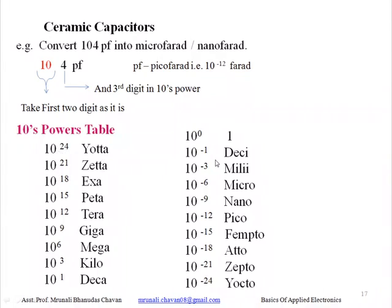Going towards the negative side, we see: 10 raised to minus 1, 10 raised to minus 3, 10 raised to minus 6, 10 raised to minus 9, and so on. They are identified as: 10 raised to minus 1 is deci, 10 raised to minus 3 is milli, 10 raised to minus 6 is micro, 10 raised to minus 9 is nano, 10 raised to minus 12 is pico, 10 raised to minus 15 is femto, 10 raised to minus 18 is atto, 10 raised to minus 21 is zepto, and 10 raised to minus 24 is yocto.